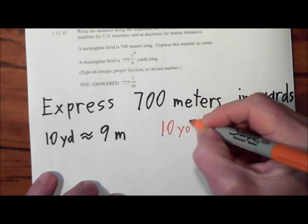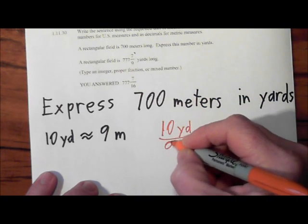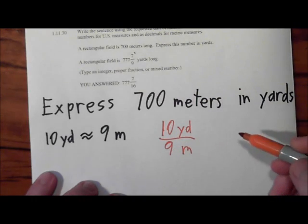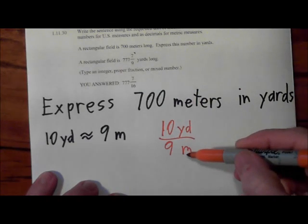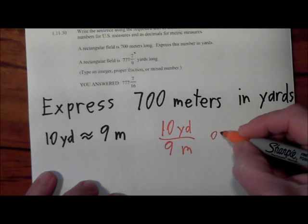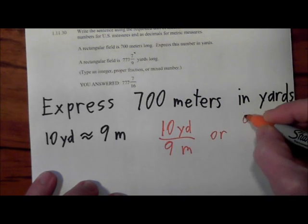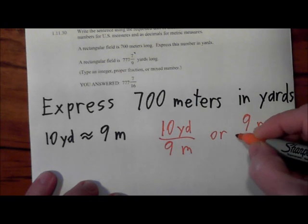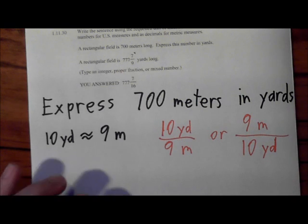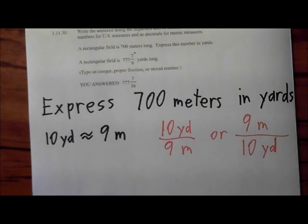10 yards over 9 meters, this is equivalent to a 1. If you have something over itself, that's equivalent to 1. Or I can say 9 meters over 10 yards. And again, this is equivalent to a one because it's the same length. We're going to use that fact to do our conversion.